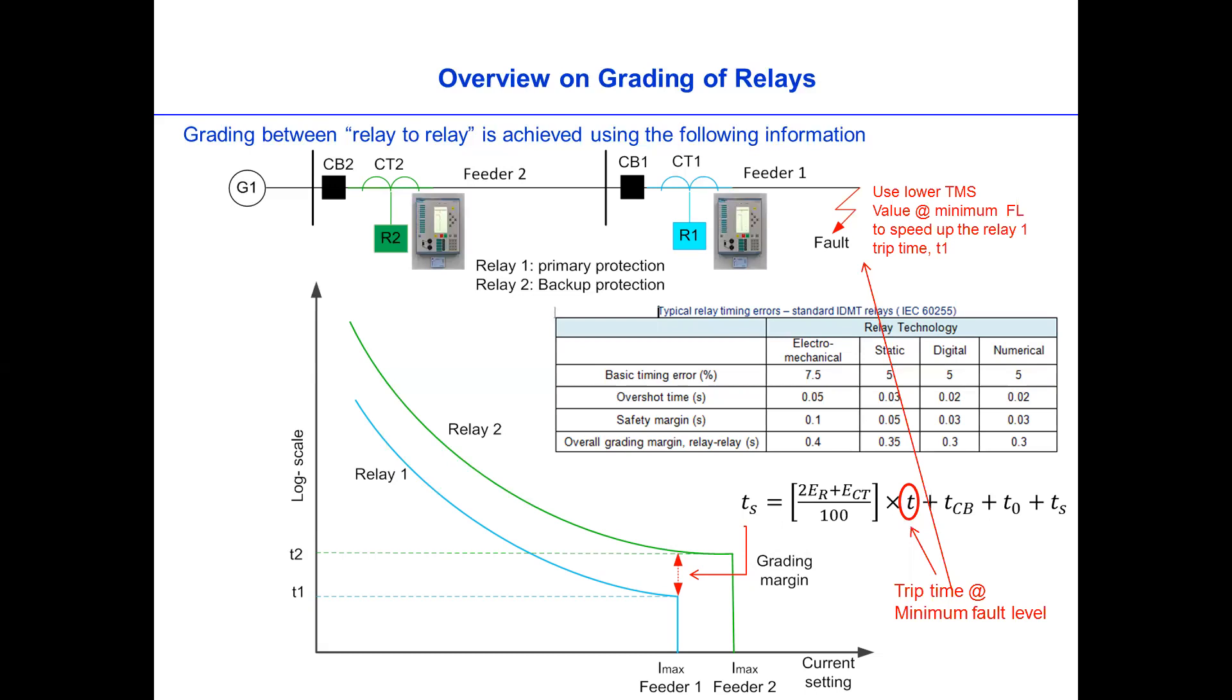And then on this one, we could choose a lower TMS value so that we can calculate the trip time of the relay, which is relay one on here for a fault on here. Then what we could do is plot T1, the trip time of the relay for the fault nearby is T, let's call it T1.